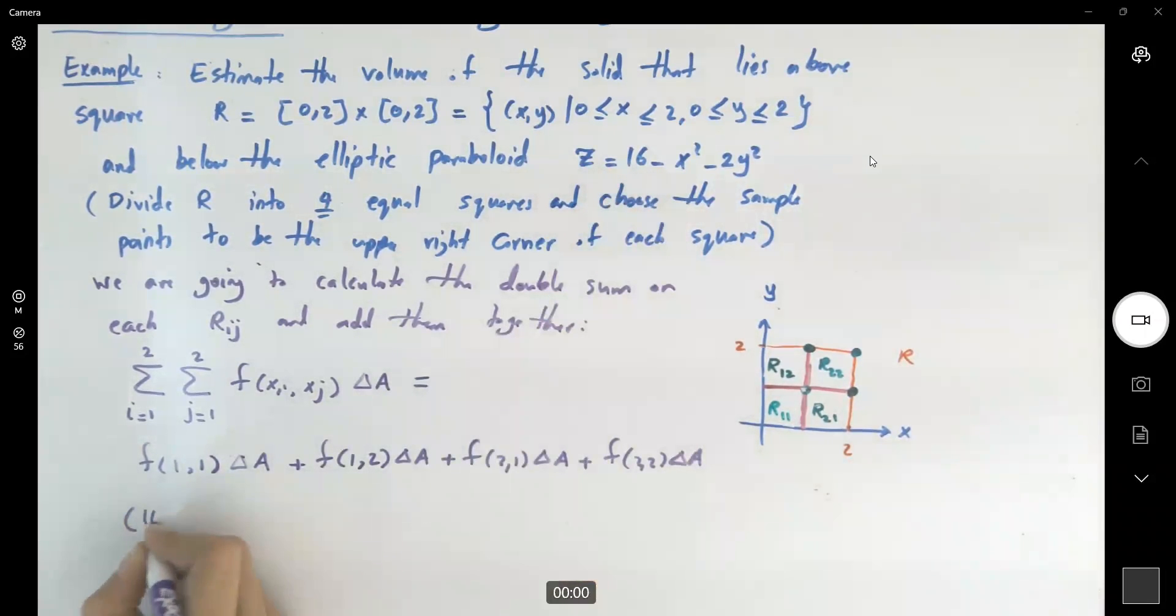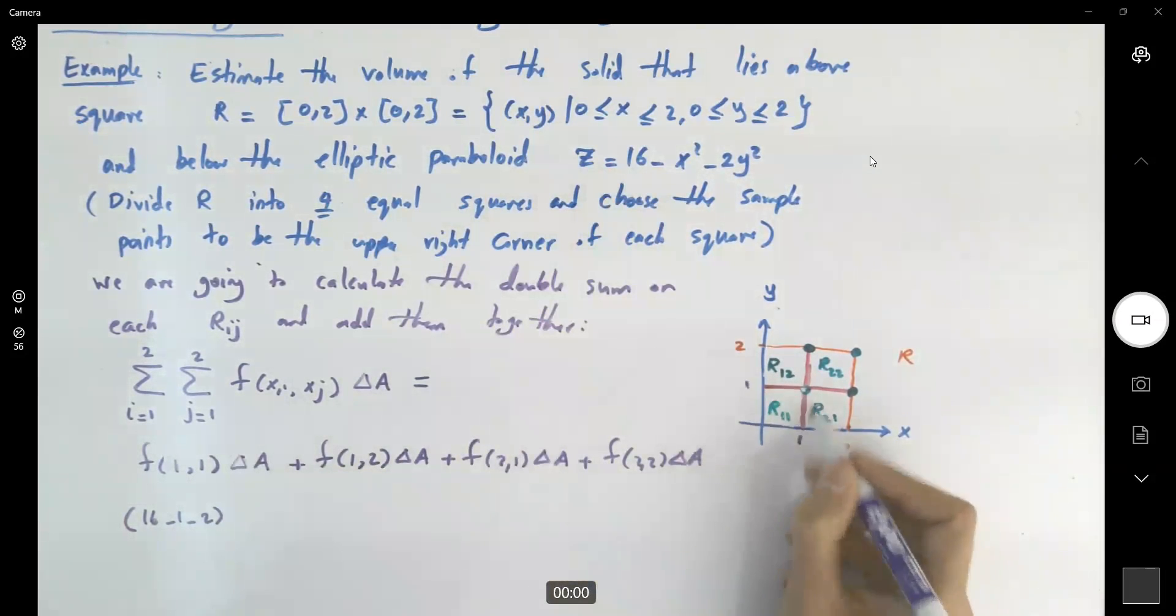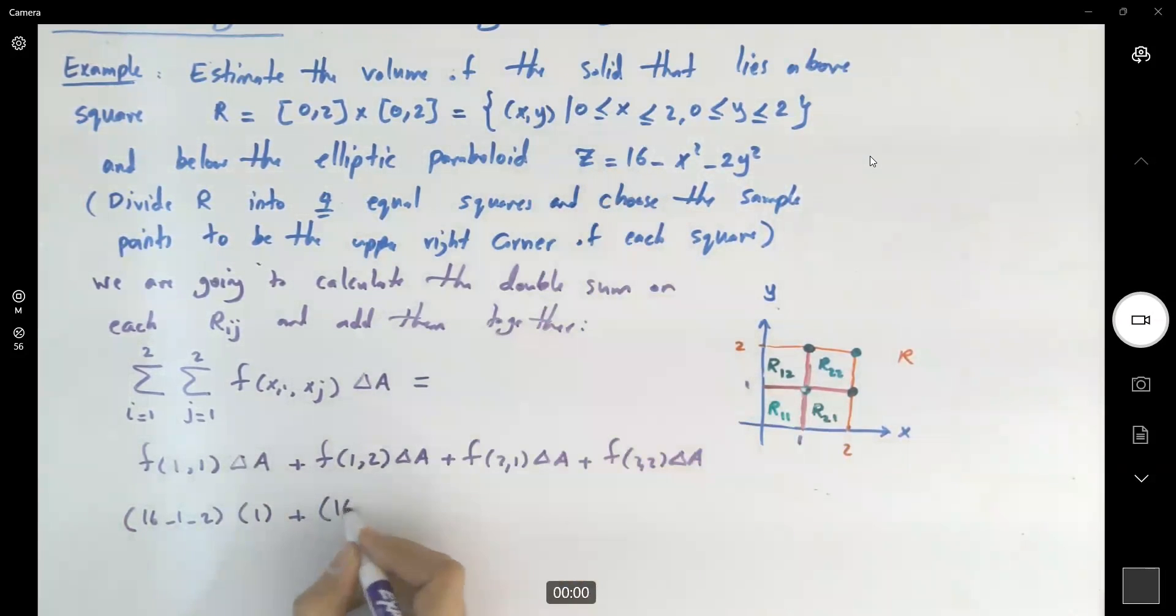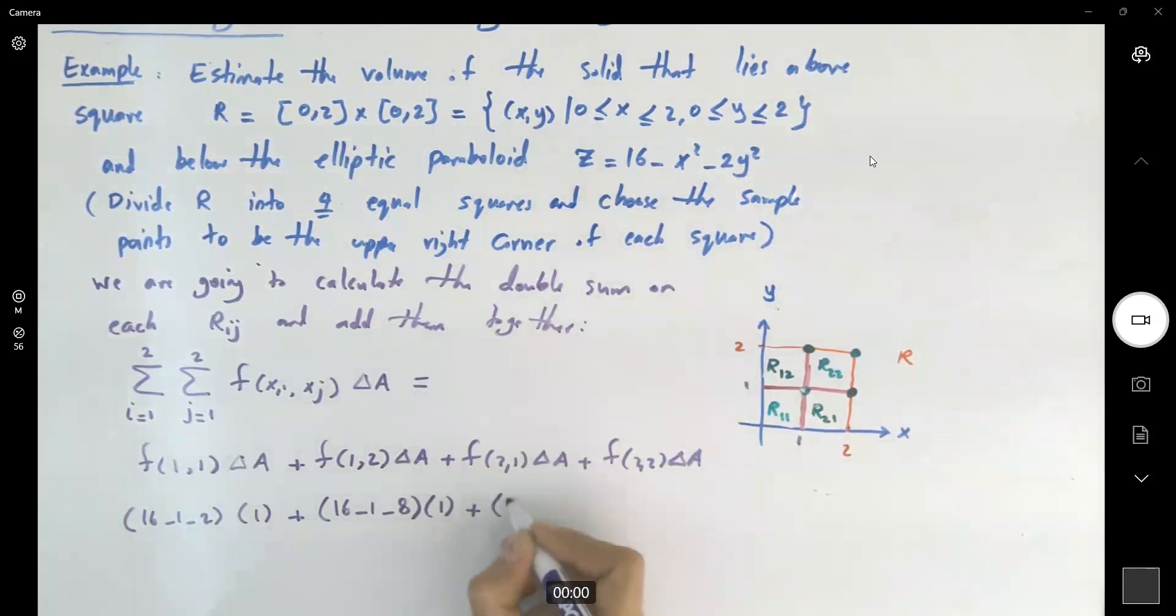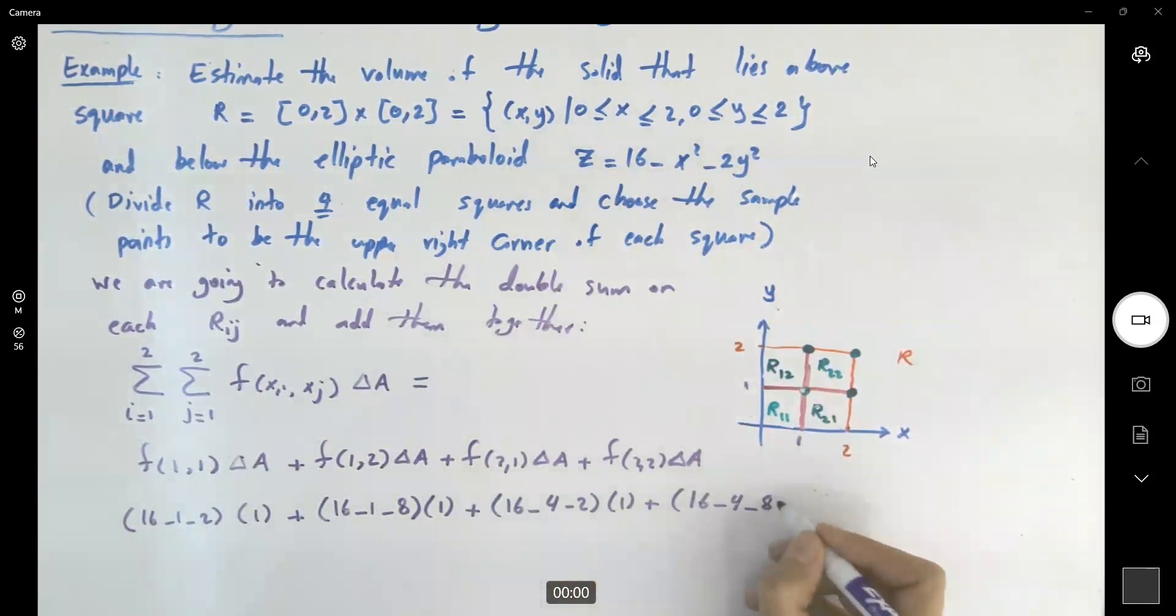We get 16 minus 1 minus 2. And what is the area? So this is 1. 1 times 1 gives you 1 plus f of 1 and 2. You get 16 minus 1 minus 2 times 4, which is 8. Delta A is 1. Plus f of 2 and 1. You get 16 minus x squared is 4 minus 2 times 1 plus f of 2 and 2. You get 16 minus 4 minus 8.